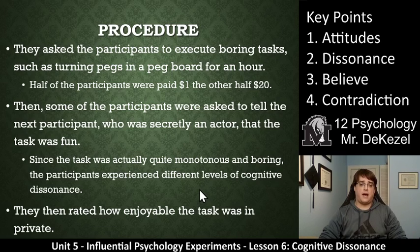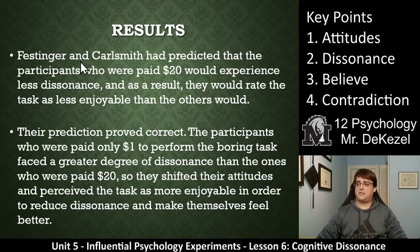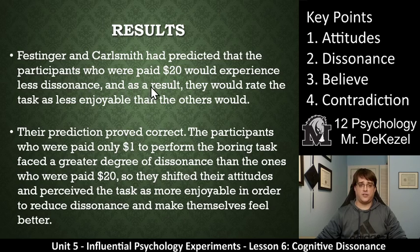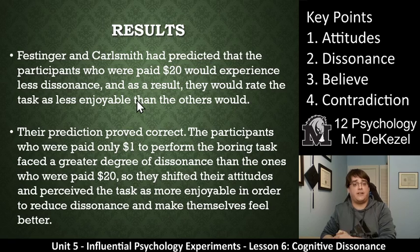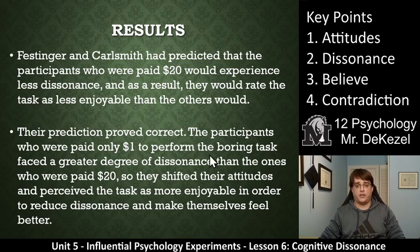They then rated how enjoyable the task was in private to somebody else. Festinger and Carlsmith had predicted that the participants who were paid $20 would experience less dissonance, and as a result they would rate the task as less enjoyable. There's less dissonance because they were paid $20 to do that task — they had another reason, a good reason to do that task for an hour. They were going to get $20. Their prediction proved correct.